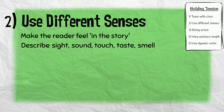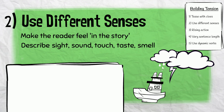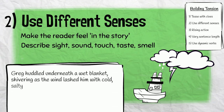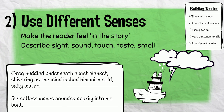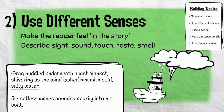Let's look at some sentences we could use in our story: "Greg huddled underneath a wet blanket, shivering as the wind lashed him with cold, salty water. Relentless waves pounded angrily into his boat." Notice these sentences don't just pay attention to the sense of sight — they also describe what the reader should hear, feel and taste. The more we're able to make the reader feel like they're there in the story, the more tension we can build.